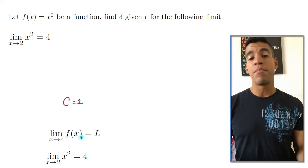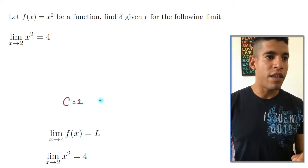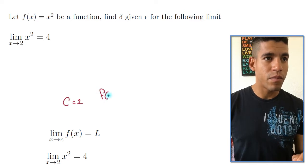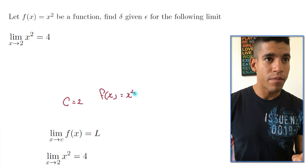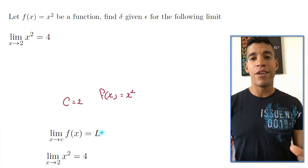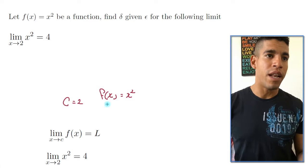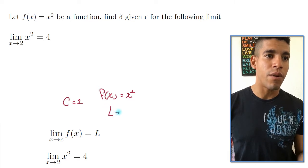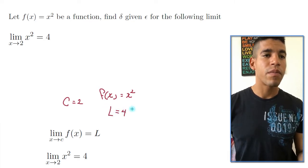Now f of x is my function. So in this case, f of x is equal to x squared. And then L is the value of the limit. In this case, is 4.